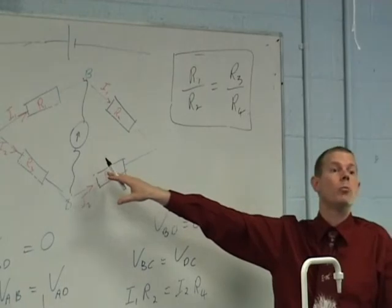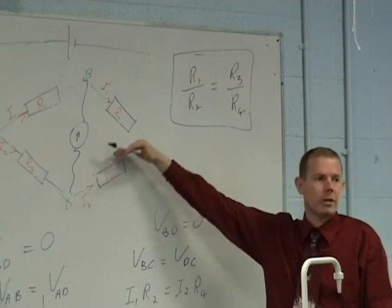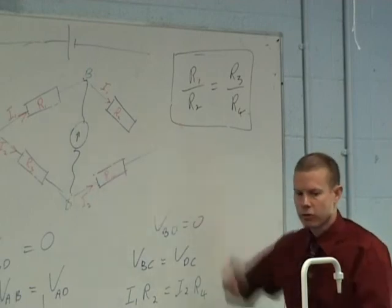Obviously, you can just use an ohmmeter to find an unknown resistance. This is another way of finding an unknown resistance, and there are also other applications of it. Okay, so far?